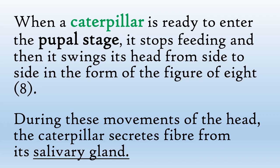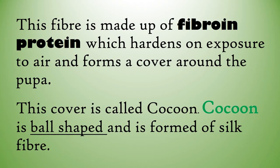When a caterpillar is ready to enter the pupal stage, it stops feeding and swings its head from side to side in the form of the figure of eight. During these movements, the caterpillar secretes fiber from its salivary gland. This fiber is made up of fibroin protein, which hardens on exposure to air and forms a cover around the pupa. This cover is called a cocoon — the cocoon is ball-shaped and is formed of silk fiber.